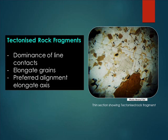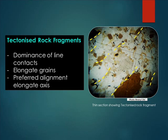This section shows tectonized rock fragments. We see a dominance of line contacts, elongate grains, and preferential alignment of the longest axis of each of the framework grains. This tells us that these sediments, wherever they've come from, have been subjected to lots of stress — and this is all part of what we use in constructing the tectonic history of the different basins.